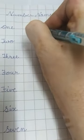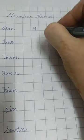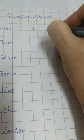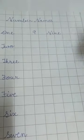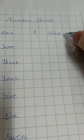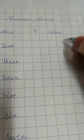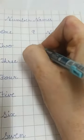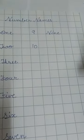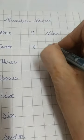After this let us write 9. Now 9 is N-I-N-E, nine. Next 1-0-10, ten. So it is T-E-N, ten.